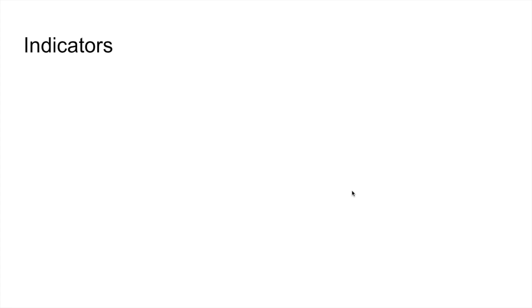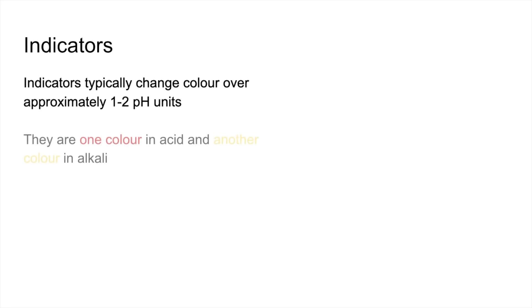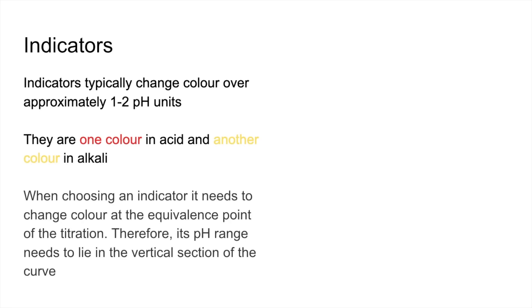We'll move on to indicators now. Indicators typically change colour over approximately one or two pH units. They are one colour in acid and another colour in alkali. When choosing an indicator, it needs to change colour at the equivalence point of the titration. Its pH range needs to lie in the vertical section of the curve.